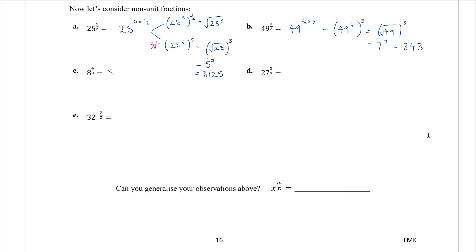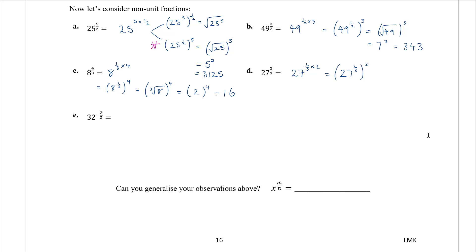Eight to the power of four thirds: four thirds is one third times four, so we have eight to the power of one third and then to the power of four. Eight to the power of one third is the cube root of eight, which is two, to the power of four, which is sixteen. Twenty-seven to the power of two thirds: that is twenty-seven to the power of one third times two, so twenty-seven to the power of one third all squared. The cube root of twenty-seven is three, squared is nine.